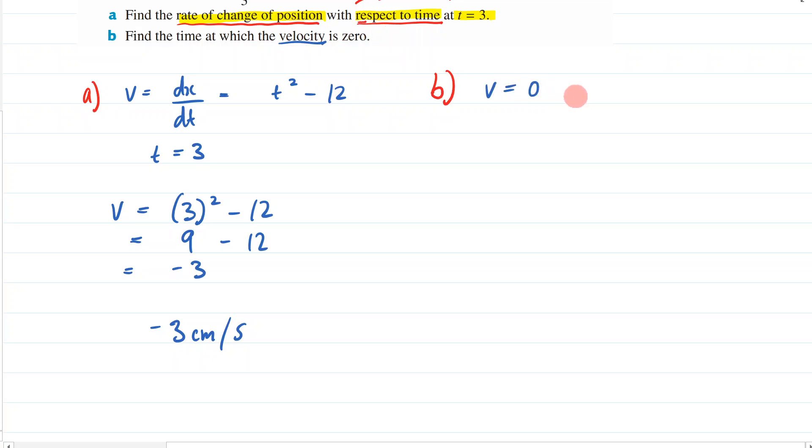So we're going to let v equals zero and solve for t. So that means it's going to be t squared minus 12 equals zero. I'm then going to solve this. It's going to be t squared is equal to 12.